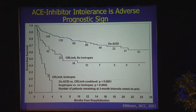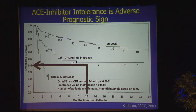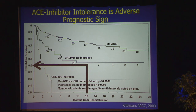Whereas if they get sent home and are taken off the ACE inhibitor due to what's called circulatory-renal limitation — meaning they become hypotensive or develop an elevation in creatinine sufficient that you have to stop the ACE inhibitor — look at their survival rate. At one year, it's about 50%.